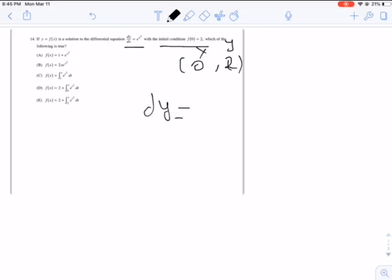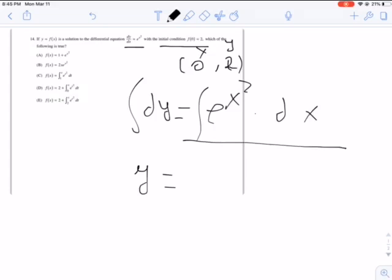So we're left with dy = e^(x^2) dx. Integrating both sides, we're left with y, and this integration is hard to integrate using elementary methods, so we will keep it as the integral of e^(x^2) dx plus c.